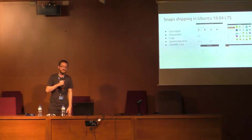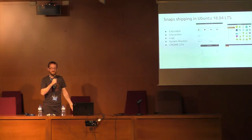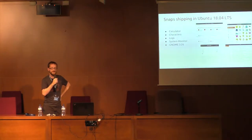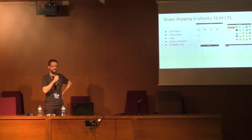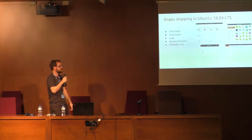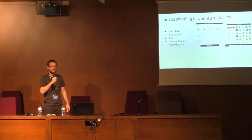From Ubuntu 18.04 we've been shipping these four GNOME apps as SNAPs: GNOME Maps, Calculator, Characters, Logs, and System Monitor. All Ubuntu 18.04 users are getting those via SNAPs, and hopefully they don't notice any difference — they're just like normal apps. We provide those using the GNOME 3.26 platform SNAP, similar to a Flatpak runtime. And that's something we want to increase — ultimately we want to see everything shipped with new systems like this.